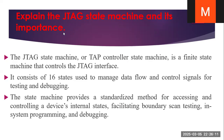Explain the JTAG state machine and its importance. The JTAG state machine, or TAP controller state machine, is a 16-state finite state machine that controls the JTAG interface. It is used to manage the data flow and control the signals for testing and debugging. The state machine provides a standardized method for accessing and controlling a device's internal state, facilitating boundary scan testing, in-system programming, and debugging.